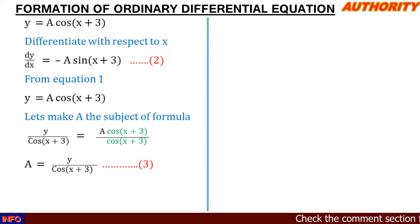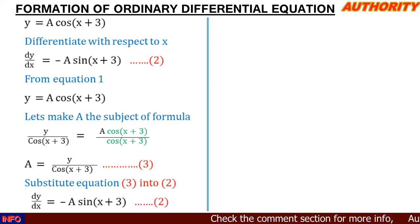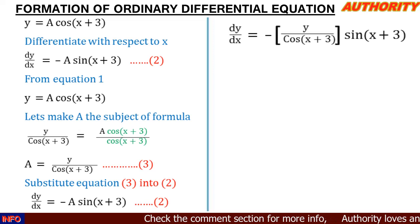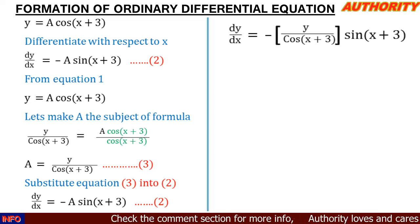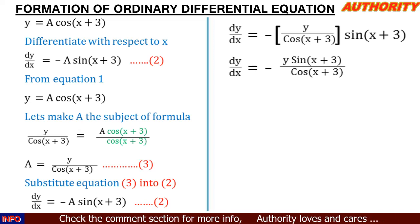Now we substitute equation 3 into equation 2. Equation 2 says dy/dx = −a·sin(x+3). In place of 'a', we plug in y / cos(x+3). So we get dy/dx = −[y / cos(x+3)]·sin(x+3), which simplifies to dy/dx = −y·sin(x+3) / cos(x+3).